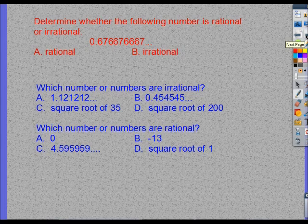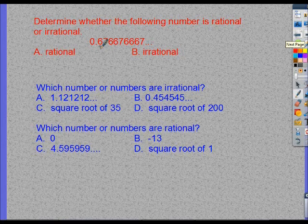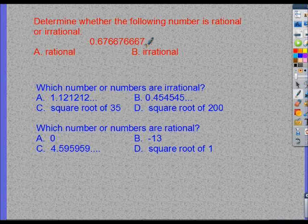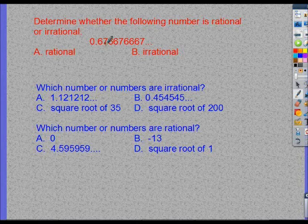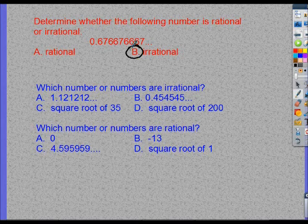All right? So, determine whether the following number is rational or irrational. So you've got to look at this. You've got 0.676676667. So, in order for this to be a pattern, it would have to go 6, 7, 6, 7, 6, 7. So this does not have a pattern to it, so it would be irrational.